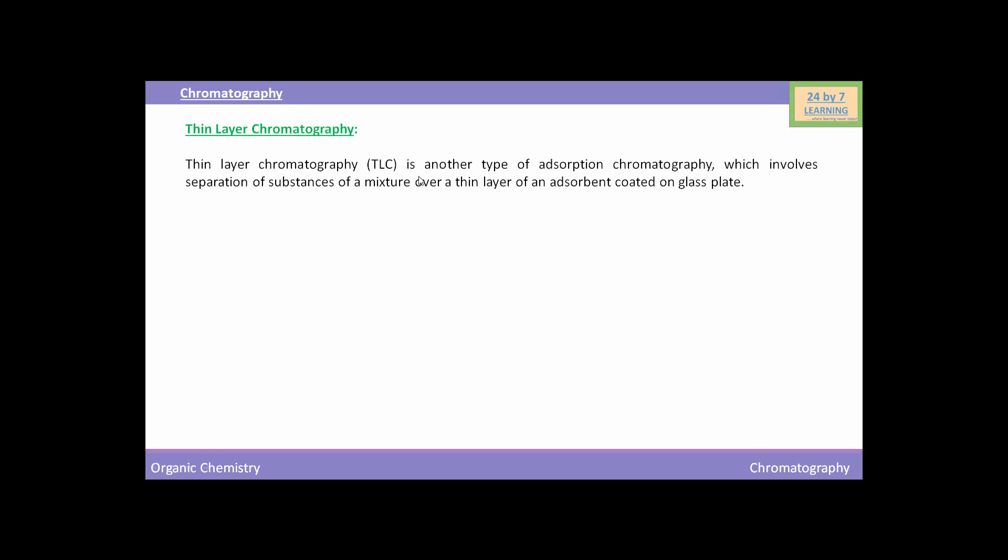Thin layer chromatography, or TLC, is another type of adsorption chromatography which involves separation of substances of a mixture over a thin layer of an adsorbent coated on glass plate. A thin layer about 0.2 mm thick of an adsorbent like silica gel or alumina is spread over a glass plate of suitable size. The plate is known as thin layer chromatography plate or chroma plate.